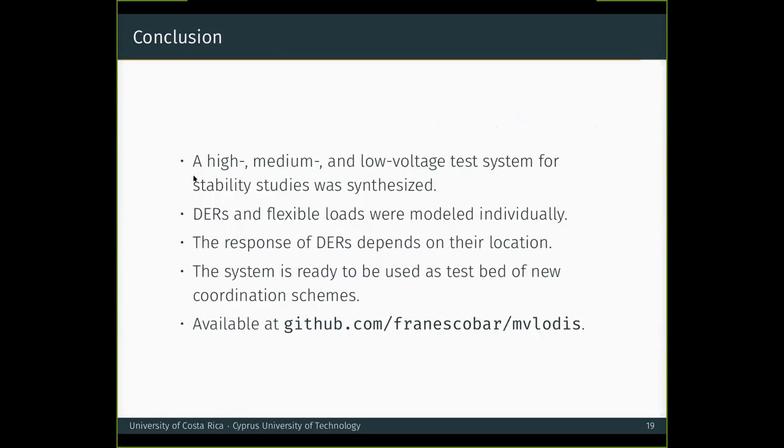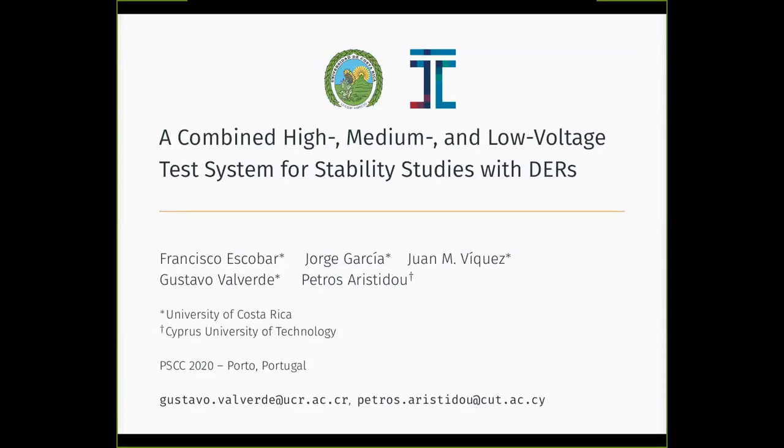To conclude, in this paper we presented a high, medium, and low voltage test system for stability studies that was synthesized from limited data. DERs and flexible loads were modeled individually, the response of DERs was seen to depend on their location, and the system is ready to be used as a testbed of new coordination schemes. I should emphasize that we do not expect power utilities to reach this level of detail, but it could be used in academia, either to test coordination schemes or to validate aggregate models. And finally, the implementation is available in this GitHub repository, in case you all want to take a look. So with this, I come to the end of my presentation. Thank you very much, and I will do my best to answer your questions. However, feel free to send any other questions to the addresses shown at the bottom.